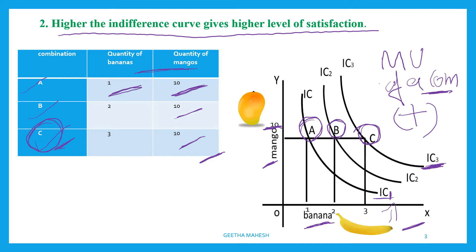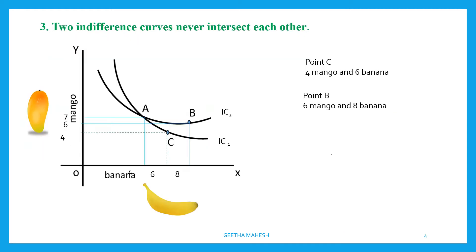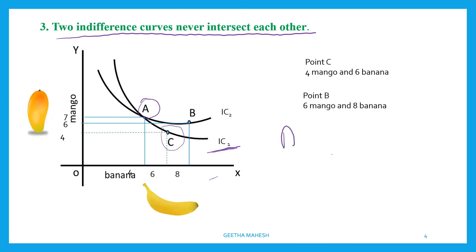The third feature of indifference curves is that two indifference curves never intersect each other. Dear students, ICs do not cross or intersect each other. Let us understand this with the help of a diagram. You can see that combination A and C lie on the same indifference curve, so both will give the same level of satisfaction.